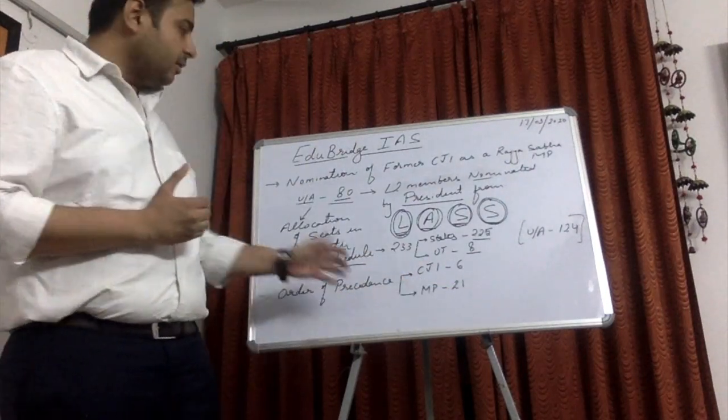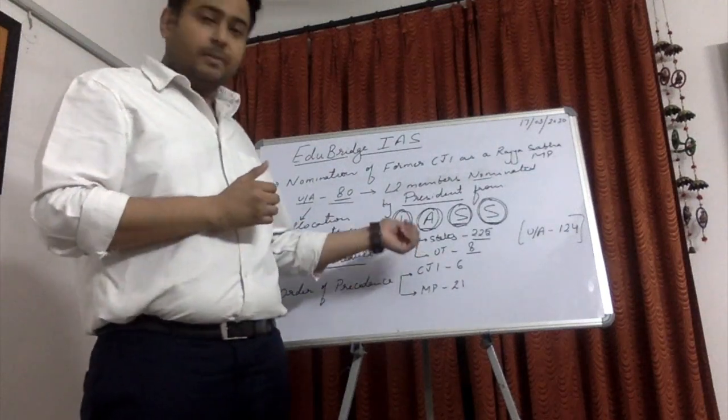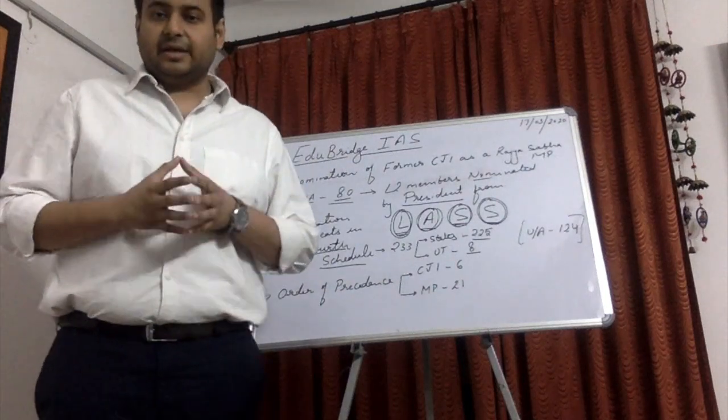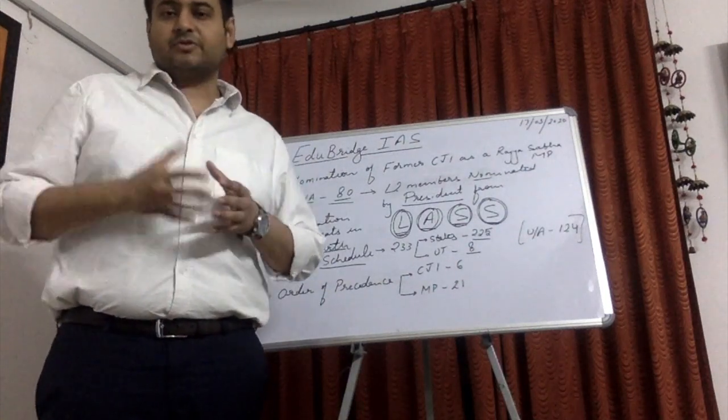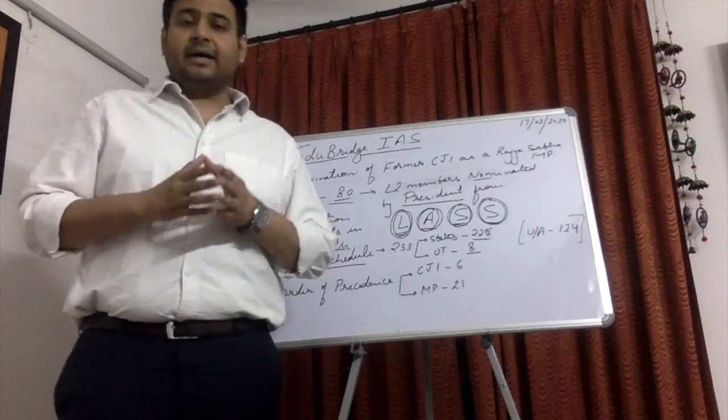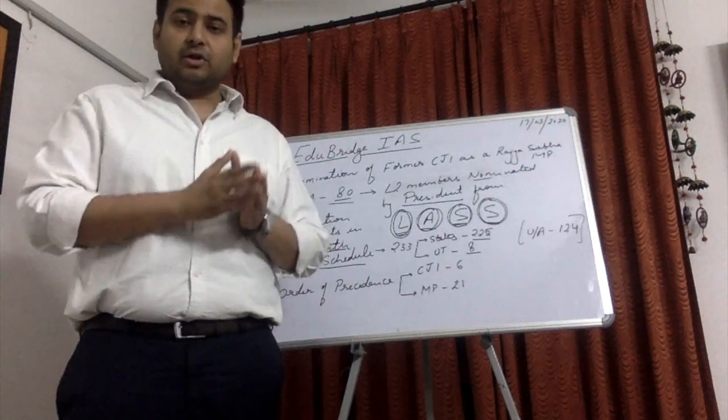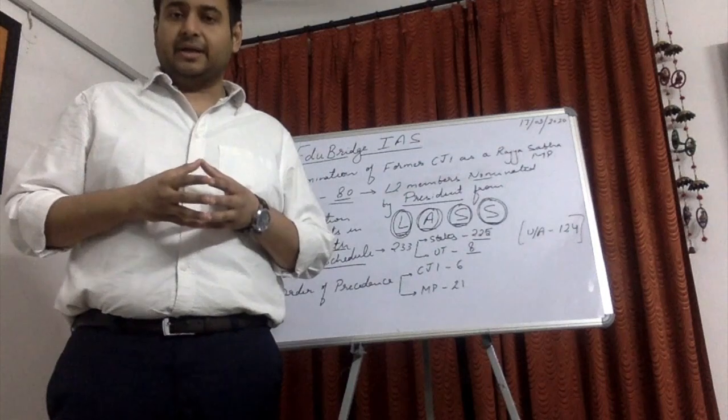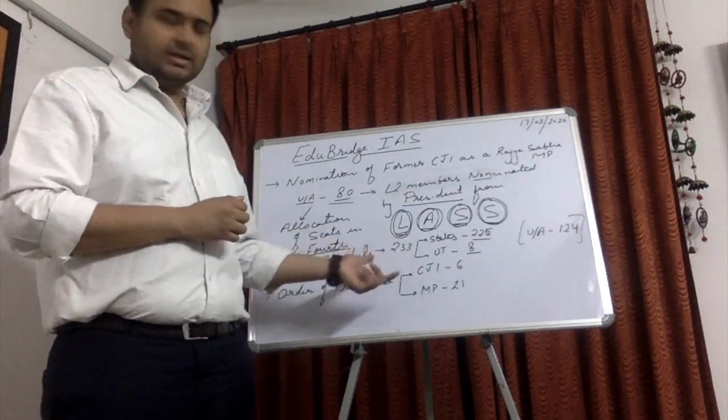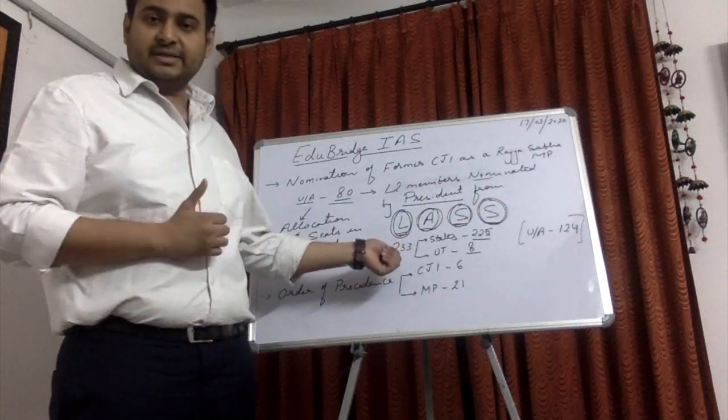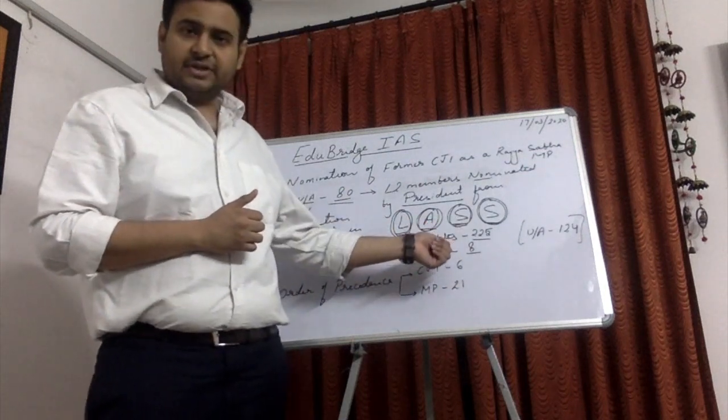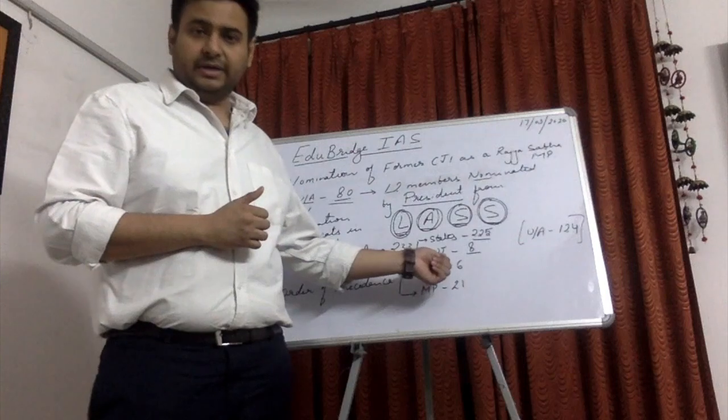We can also expect the changes in the number of seats allocated to the states and union territories in the Rajya Sabha. Because, recently in the year 2019, there have been a Jammu Kashmir Reorganization Act that has changed the status of the state of Jammu Kashmir and reorganized it as a union territory and also it has created a separate union territory which is Ladakh. We can expect the changes in the composition of Rajya Sabha. At present, there are 233 seats that are provided to the elected members amongst which 225 seats are given to the state and 8 seats are given to the union territory.